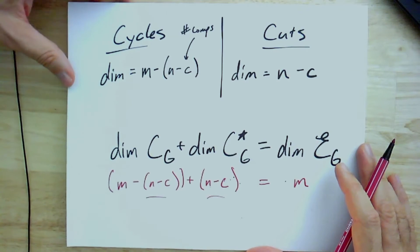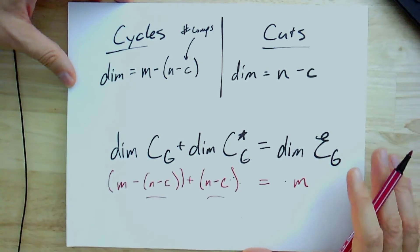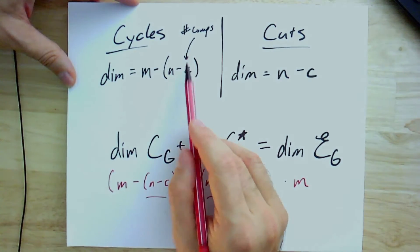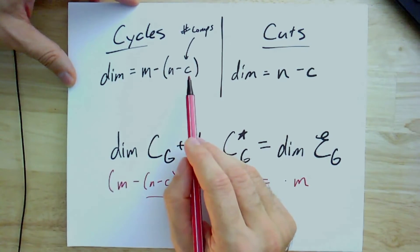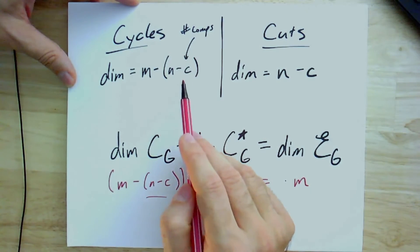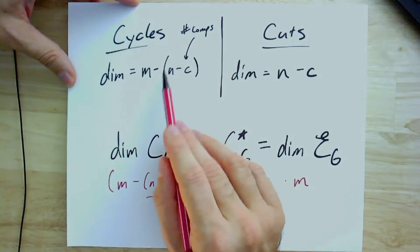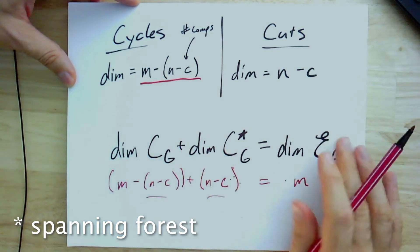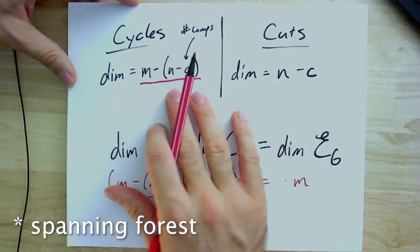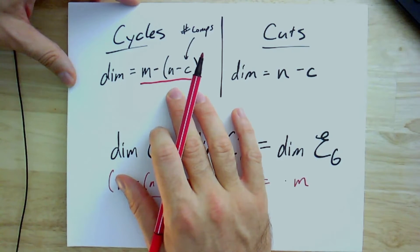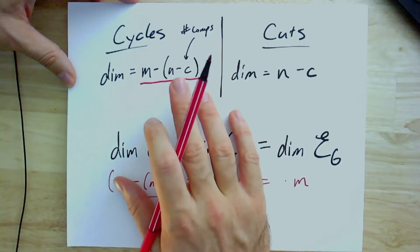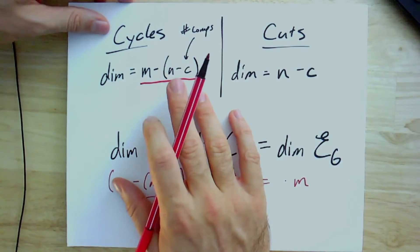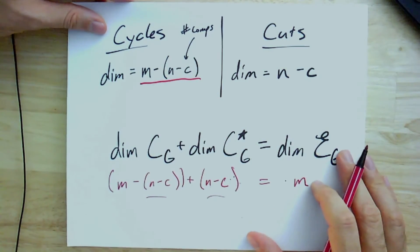And if it's not connected, and it only has c components, it will have n minus c edges in the spanning tree. So I remove those from the total set of edges. And this will be the number of edges that are not in some spanning forest of the graph. And we showed that they generate the vector space of cycles. I'll leave it to you to check that they're actually independent as well.